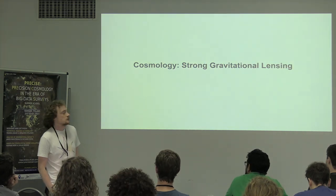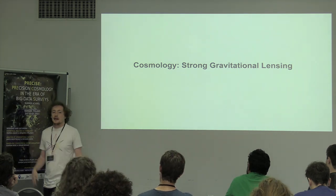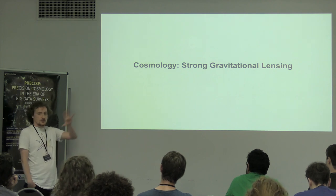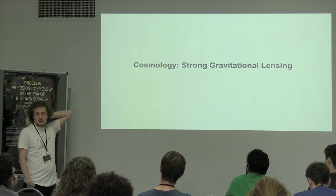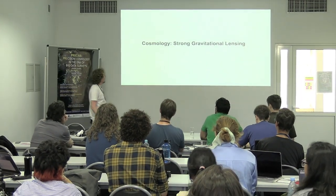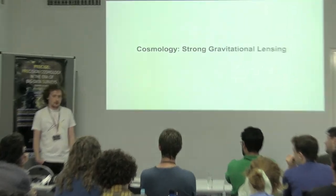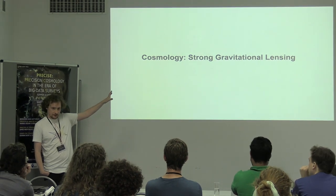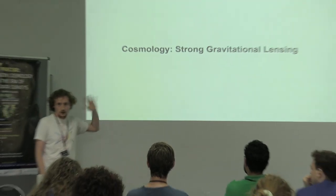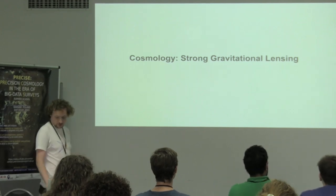I'm about to shift gear into session two on lensing. Session one gets us up and running with fitting models to data. In session two, we're basically going to take the tools we've learned in session one and instead of fitting a generic 1D Gaussian to 1D data, we're going to apply them to a real astronomy scientific use case — my area of research — a strong gravitational lens.